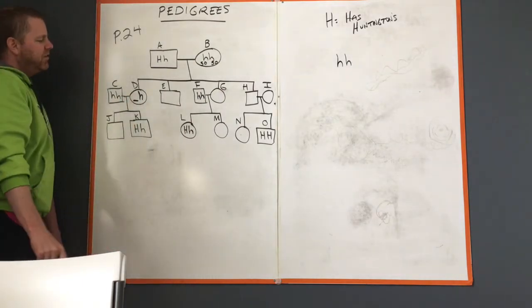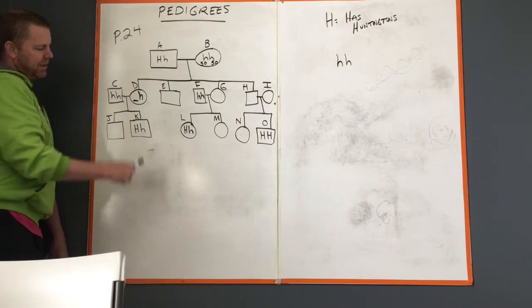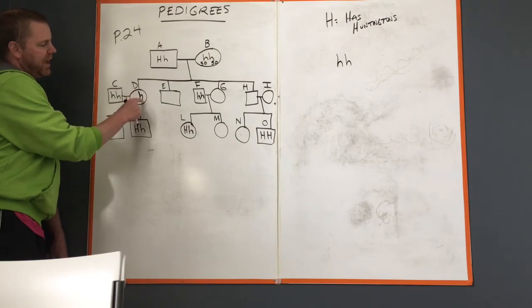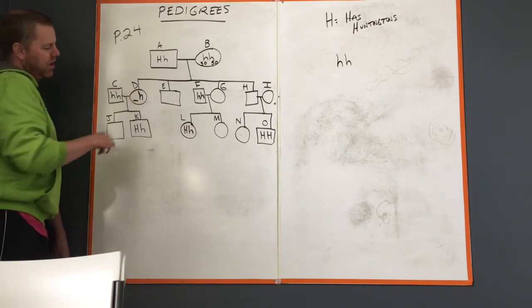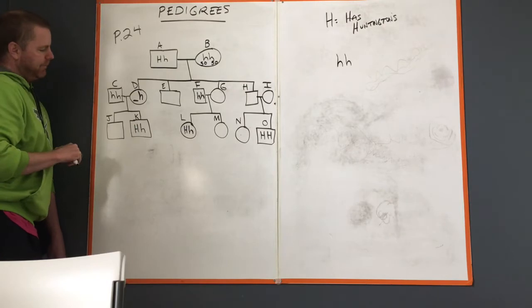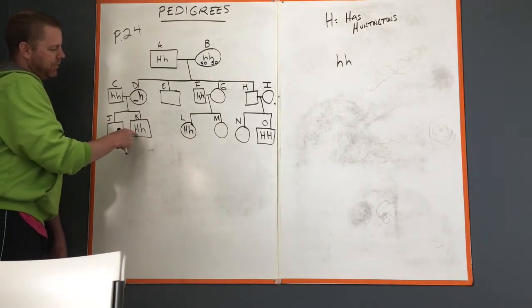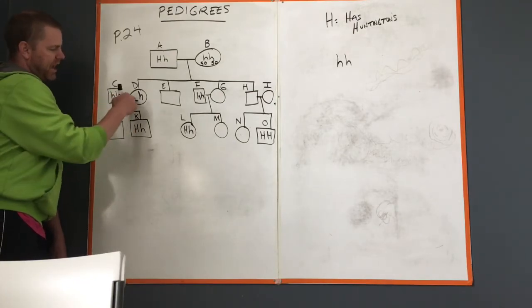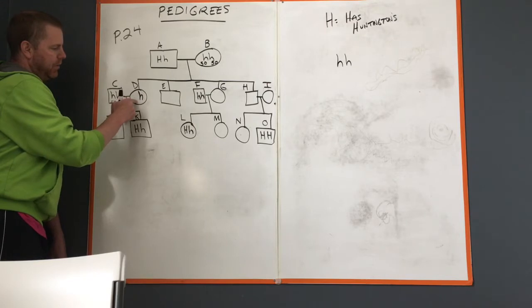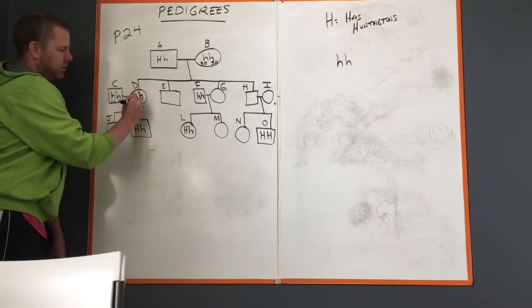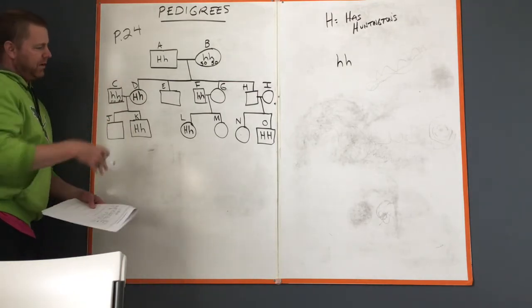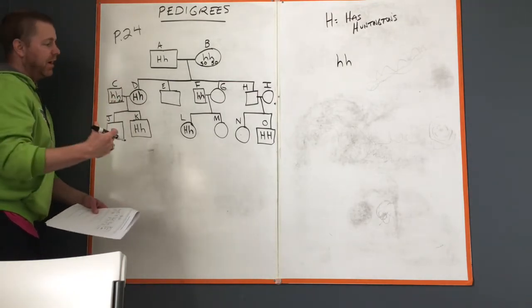I'm going to look at person K, little h little h. We know that person D has at least one little h. Well, K had to get this capital H from somebody. It wasn't possible for K to get it from C, so therefore this big H had to come from mom. Therefore mom is big H little h. She's a heterozygous carrier. Does she have Huntington's? Yes, because it's dominant.